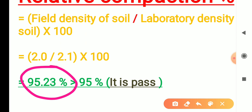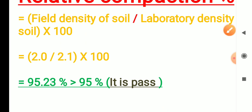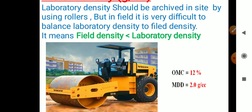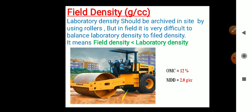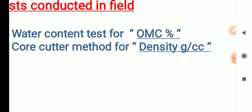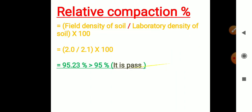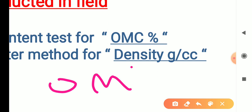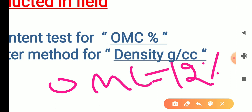To check whether density is achieved or not, we collect a small sample from the laid soil in the field and bring it to the lab to conduct a water content test. If the OMC of 12 percent is achieved — or a value close to 11.9 or 11.5 percent — the work is correct. It should not exceed 12 percent.